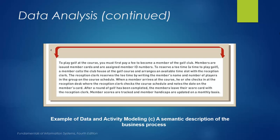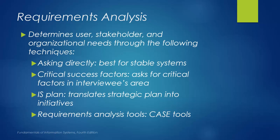This slide shows an example of a semantic description of the system — we can describe what's going on in that business and describe each business process separately. For a successful requirements analysis, we need to identify everyone involved in the system to make sure we are capturing all system functions, features, and processes. We need to ask stakeholders directly about the critical success factors of the system, with questions that are short, to the point, and capture these critical areas.